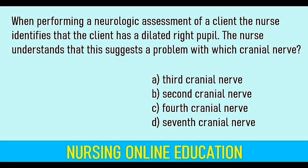When performing a neurological assessment of a client, the nurse identifies that the client has a dilated right pupil. The nurse understands that this suggests a problem with which cranial nerve? Options — Third cranial nerve, Second cranial nerve, Fourth cranial nerve, Seventh cranial nerve. Answer: Third cranial nerve. The third cranial nerve is the oculomotor nerve, which controls pupil constriction and dilation.